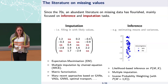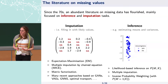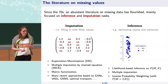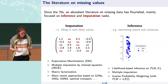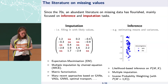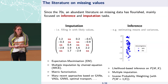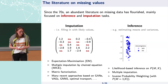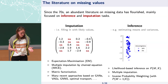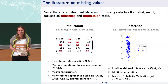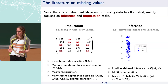The second task that has been studied a lot is inference — trying to estimate means or variances of some variables despite missing values in them. In textbooks, you'll find mostly methods based on likelihood-based inference, multiple imputation, and inverse probability weighting, something similar to what's used in causal inference.